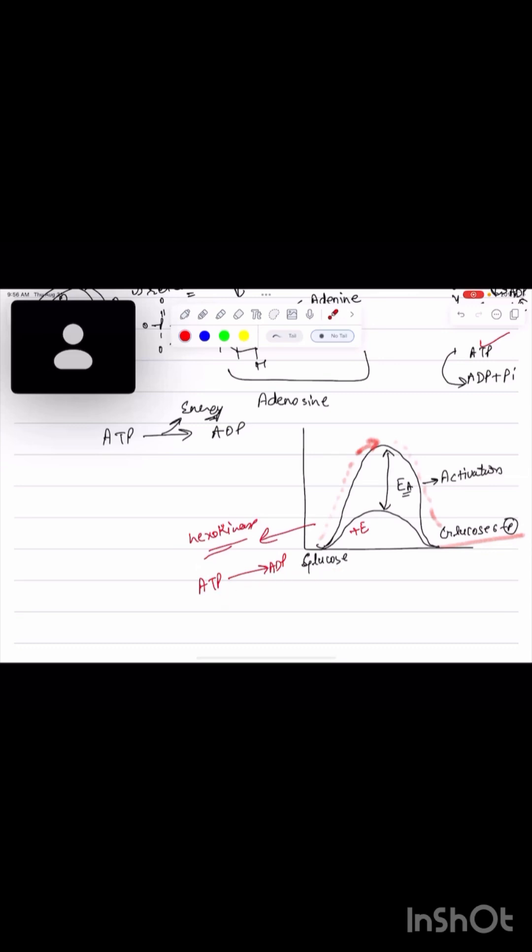The ATP powers the enzyme to move forward and lower the activation energy. You can imagine that without ATP and such coenzymes and cofactors - there are cofactors also which will be required, like zinc, cobalt, and magnesium.